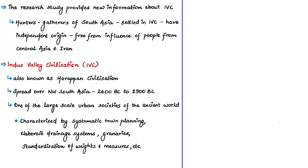The new study says that the hunter-gatherers of South Asia who became settled people in the Indus Valley Civilization have an independent origin — free from the influence of people from the steppes of central Asia or from Iranian farmers. The authors say this finding negates the hypothesis that there was mass migration from outside South Asia during or before Harappan times. The study also established genetic continuity from ancient South Asian hunter-gatherers prior to the IVC to individuals after the IVC and even to modern times.